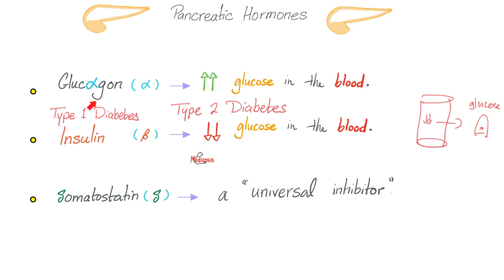When fasting, glucose drops and drops in the blood until glucagon comes and saves the day by increasing glucose in the blood. Conversely, insulin is abundant in the feeding state. When you've just eaten, glucose rises in the bloodstream until insulin comes to save the day by lowering the glucose — taking that glucose and ramming it into cells.